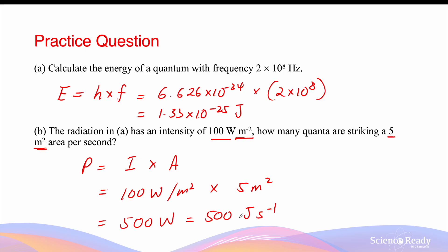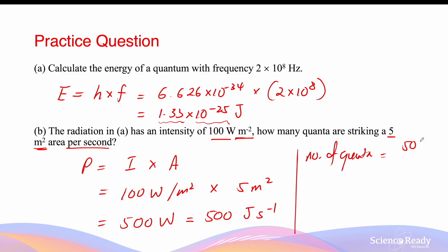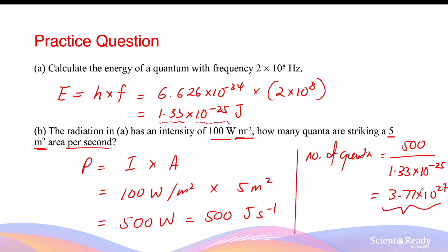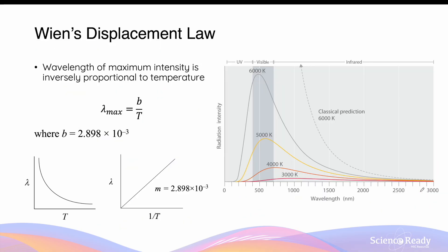This means every second there are 500 joules of energy striking the 5 m² area. The number of quanta per second equals total energy per second divided by energy per quantum: 500 ÷ (1.33 × 10⁻²⁵) = 3.77 × 10²⁷. This is the total number of quanta striking the 5 m² area every second.